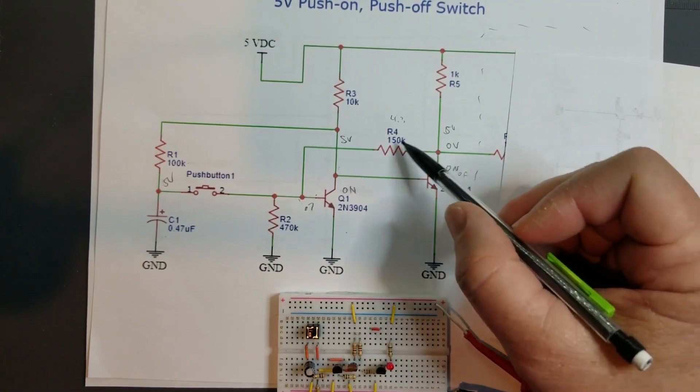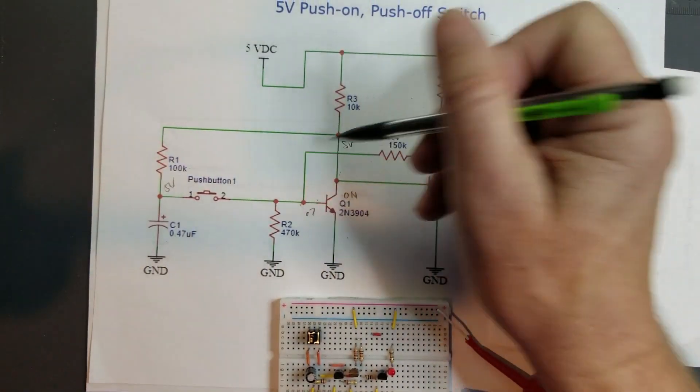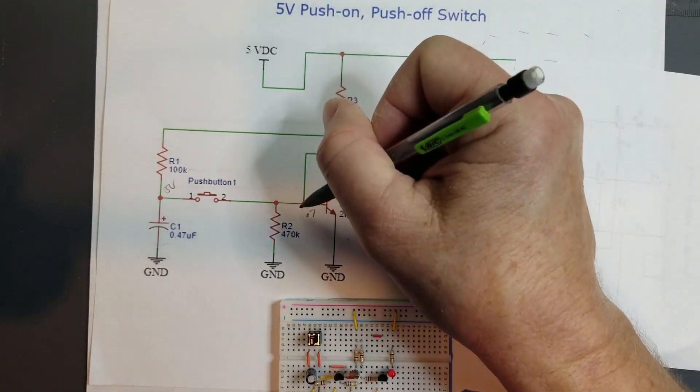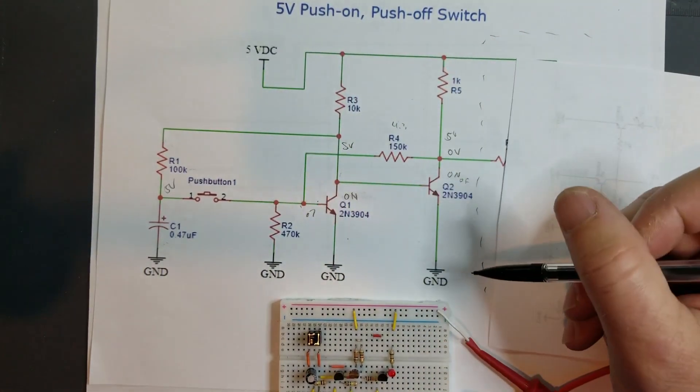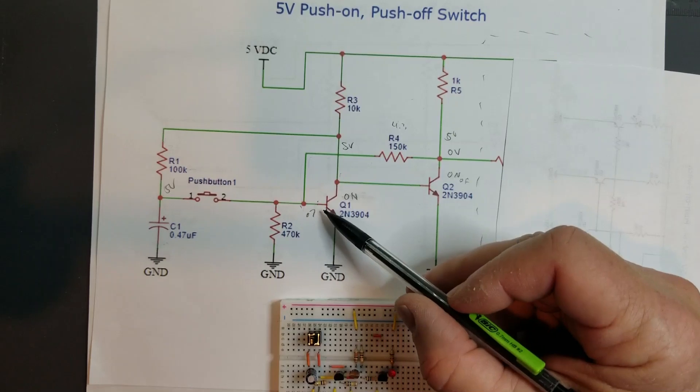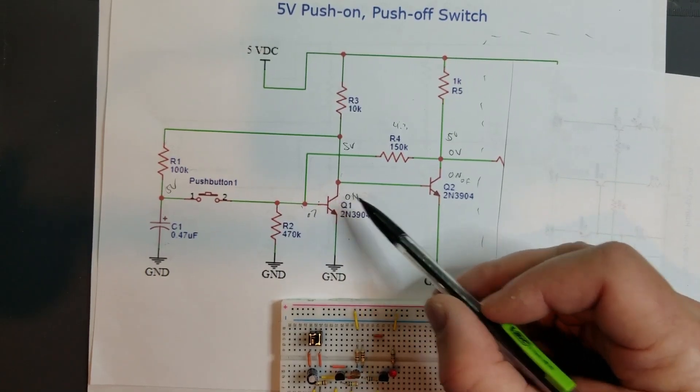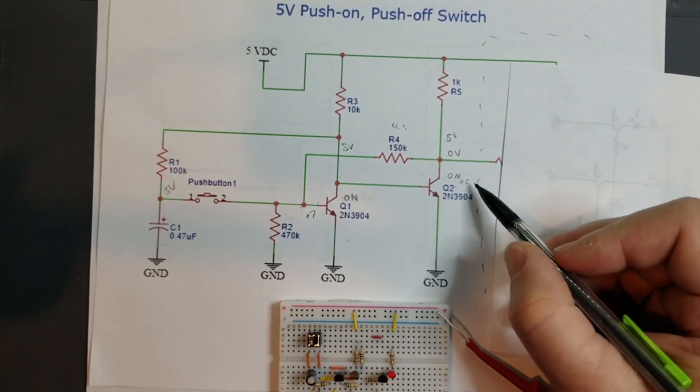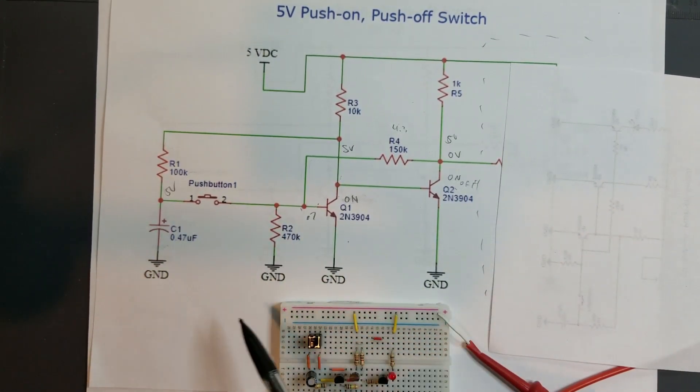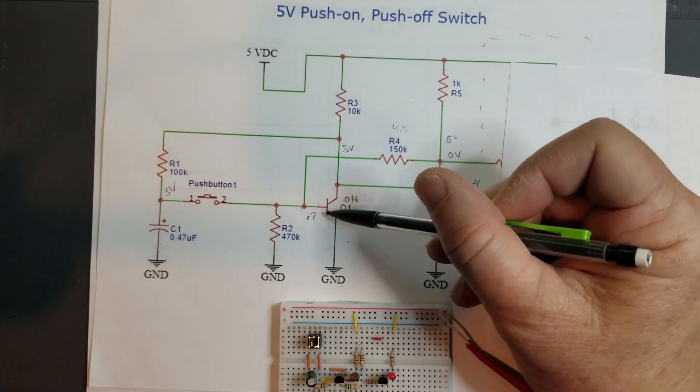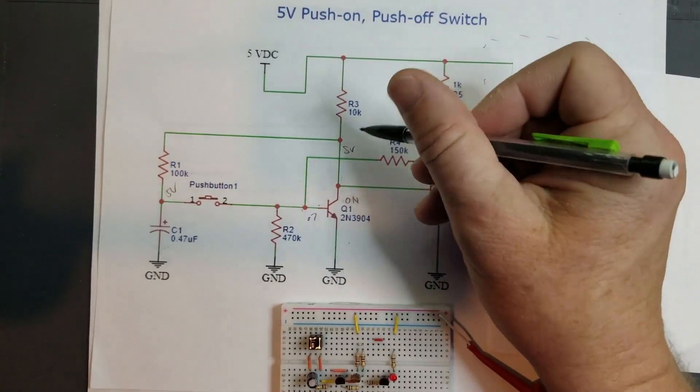Then this voltage goes high. When this button was pressed, this base was pushed high, turned this transistor on, and now this circuit has latched. And this is now positive. We have a current flowing through here and through that PN junction and forward biasing it. Now it's keeping that transistor on, and now this transistor is kept on, this stays low, this transistor stays off.